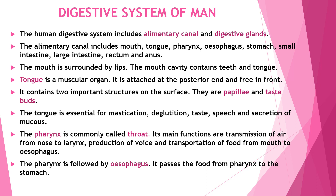The mouth is surrounded by lips. The mouth cavity contains teeth and tongue. The tongue is a muscular organ, attached at the posterior end and free in front. It contains two important structures on the surface: papillae and taste buds. The tongue is essential for mastication, deglutition, taste, speech, and secretion of mucus.